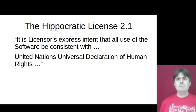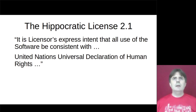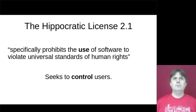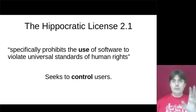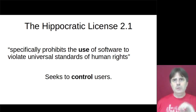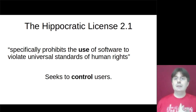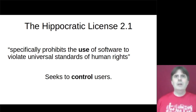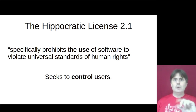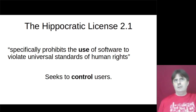The Hippocratic Licence is perhaps the most visible recent example of efforts to bring use discrimination into free and open source licensing. It states: 'it is the licence's express intent that all uses of the software will be consistent with the United Nations Universal Declaration of Human Rights,' and 'specifically prohibits the use of the software to violate these universal standards of human rights.' Not only is this clearly use discriminatory, it seeks to control users — diametrically opposed to the Free Software Foundation's approach, which seeks to protect users. The Hippocratic Licence exploits that power imbalance to control users, albeit for a higher purpose, maybe.